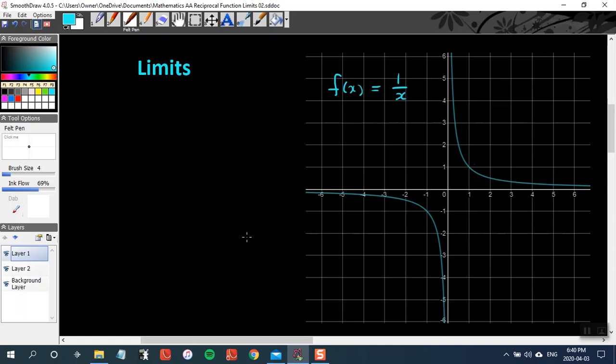As we saw previously, it has two asymptotes. We've got a horizontal asymptote, that's the x-axis, and a vertical asymptote, which is the y-axis.